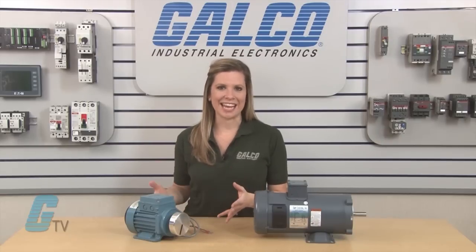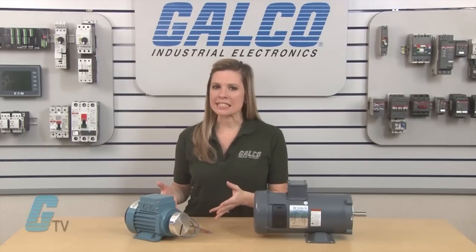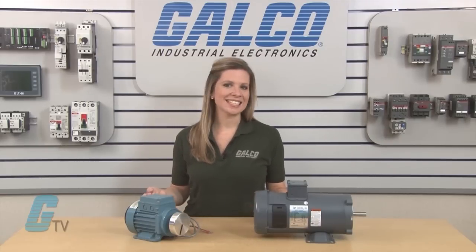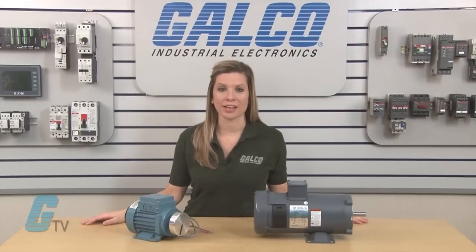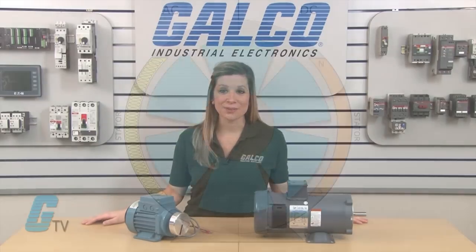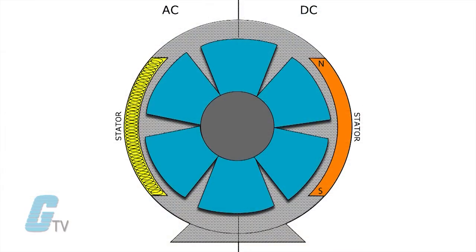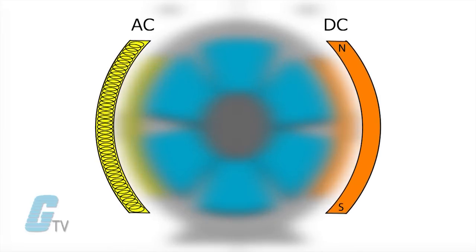Motors are typically run by a rotor and a stator. The stator is stationary and consists of the magnetic poles that revolve around the outside of the rotor. Using an AC induction and DC permanent magnet motor as an example, the AC motor has windings while the DC motor has magnets as the stator.